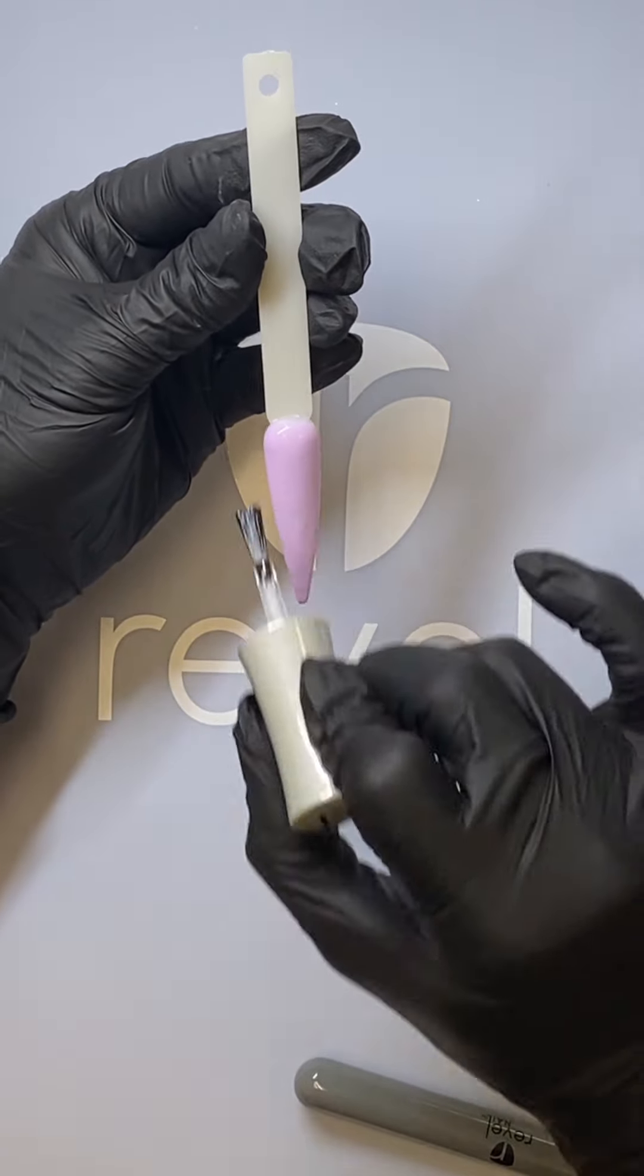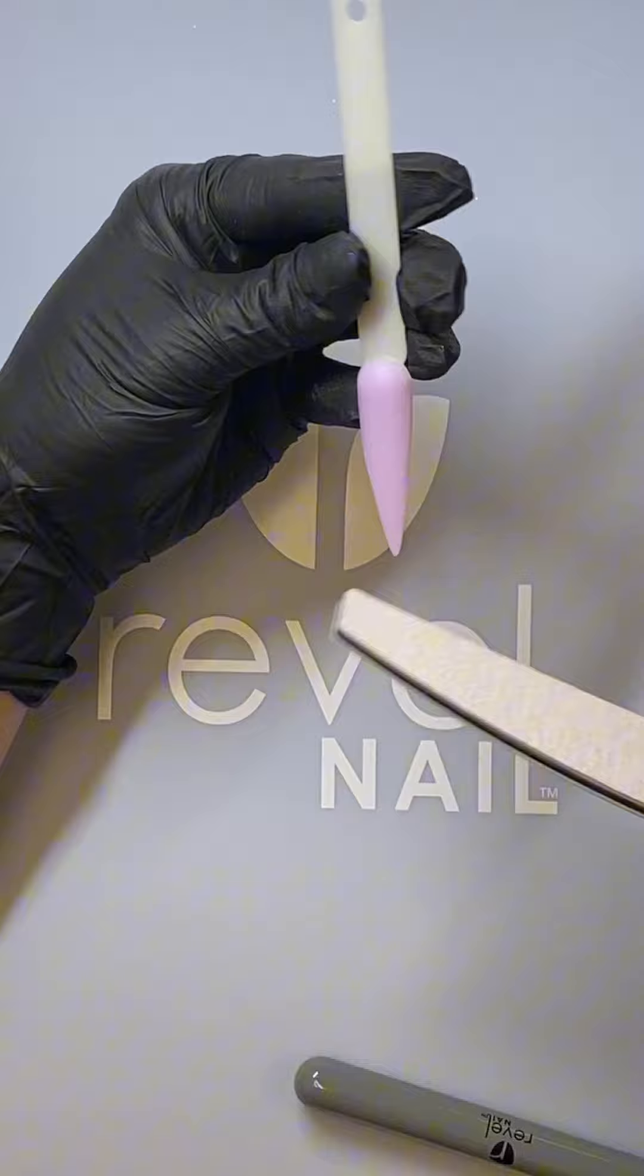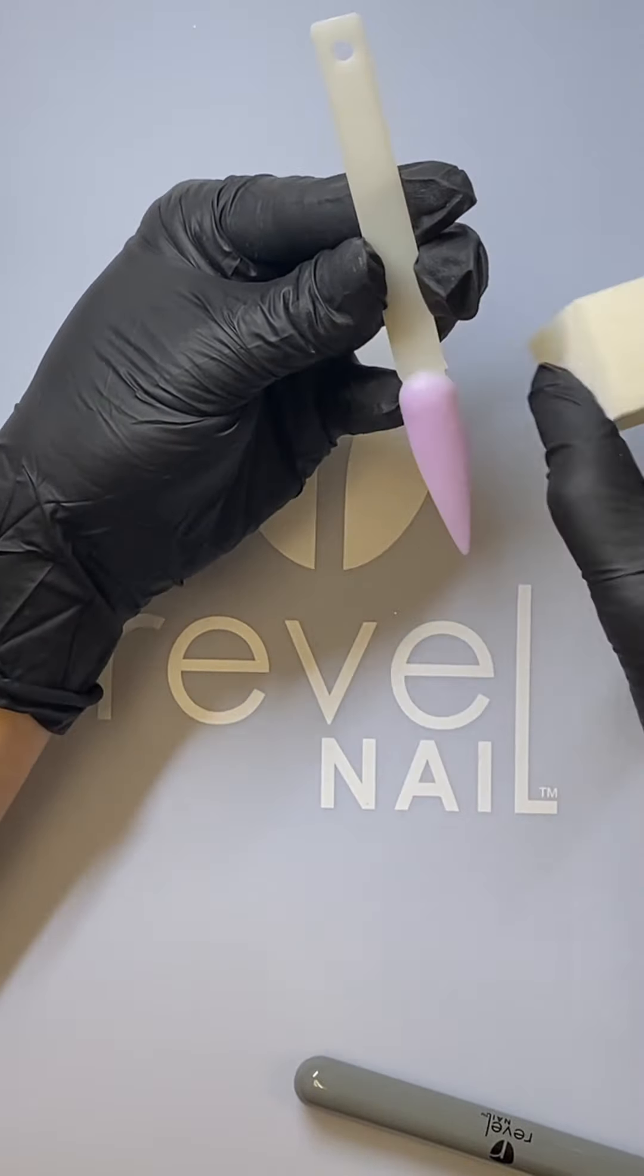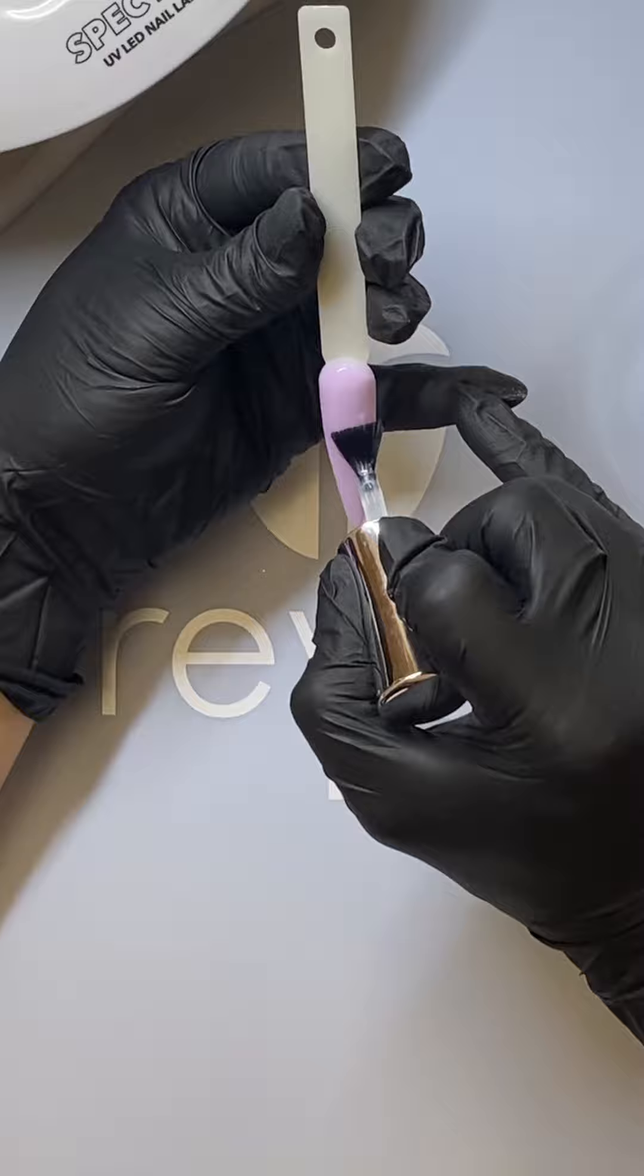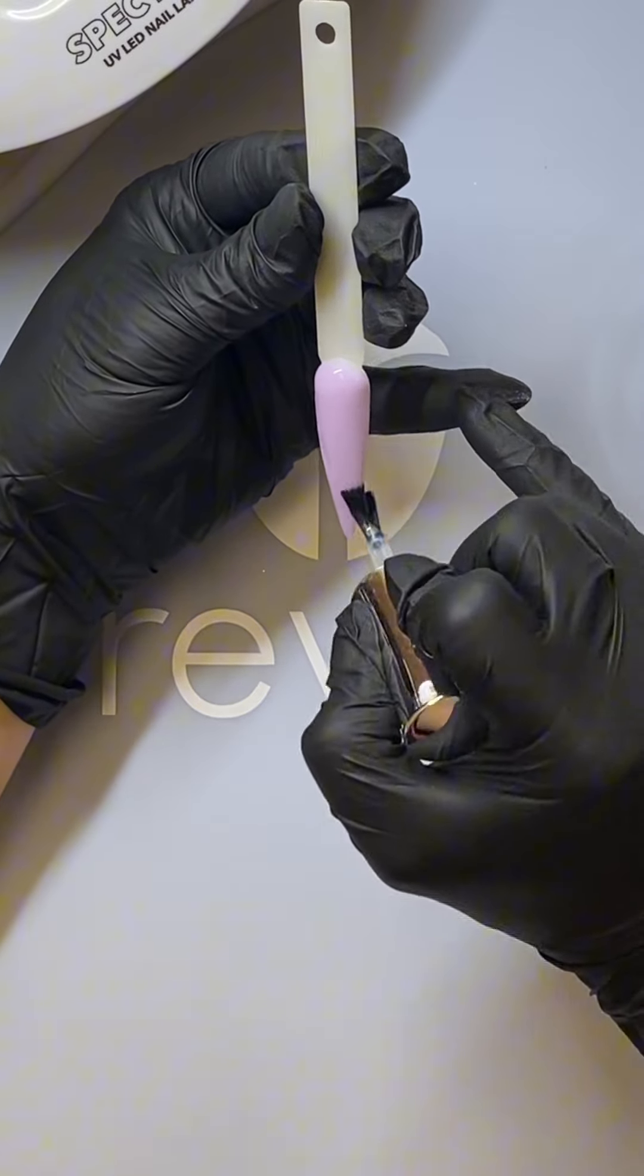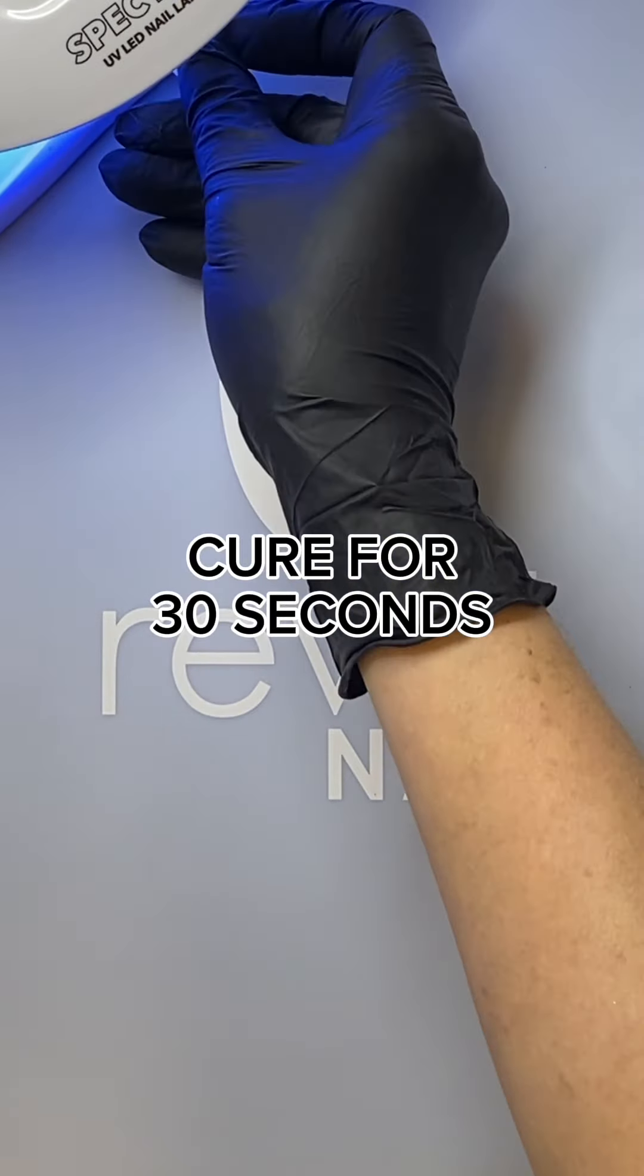Next go in with your activator and then file and buff. Once you've achieved your desired shape and smoothness, apply a layer of our matte gel topcoat. Cure this for 30 seconds.